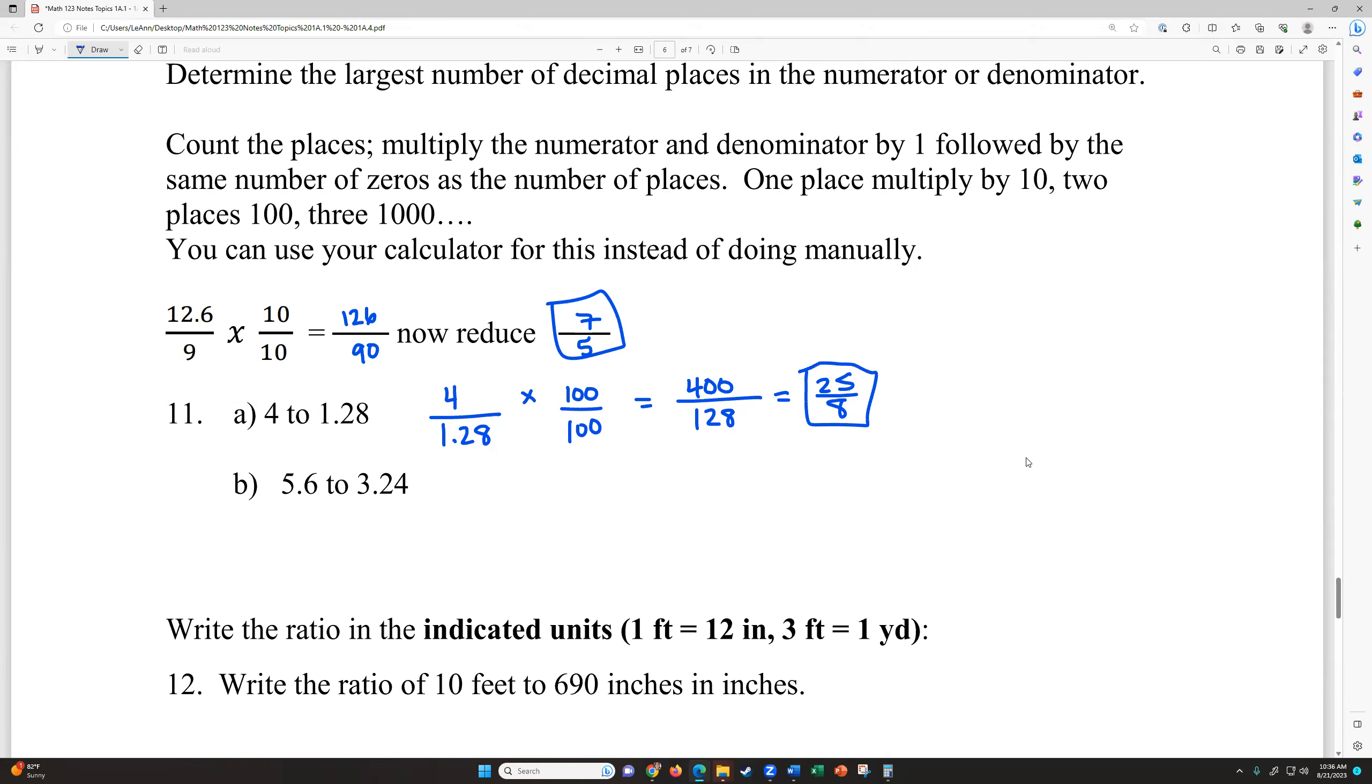So please watch the video I'm going to post about the TI 30 XS, how to use your calculator to reduce those fractions. And then this one is 5.6 over 3.24. Now notice we have decimals on top and bottom. So we want to get rid of the one that has the most places to the right. That's what we determine we multiply by. So since this one has two places to the right, we're going to multiply by 100. So that's going to equal 560 over 324. And if I use my calculator to reduce that, I get 140 over 81.